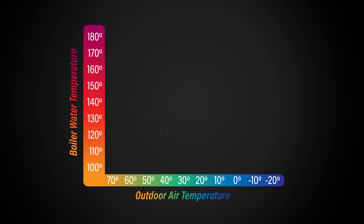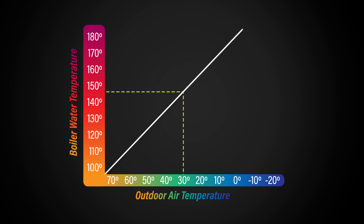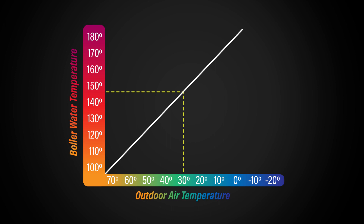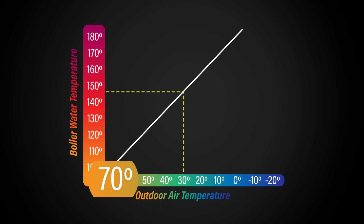This chart shows the outdoor reset curve that we use nowadays for our high-efficiency boilers. There are four temperatures that we have to set for each system individually, because every building reacts differently. The two outdoor temperatures we use can be consistent — zero degrees outside for the coldest day of the year and 70 degrees for the warm day of the year. That's typical for our climate and works through just about every application.